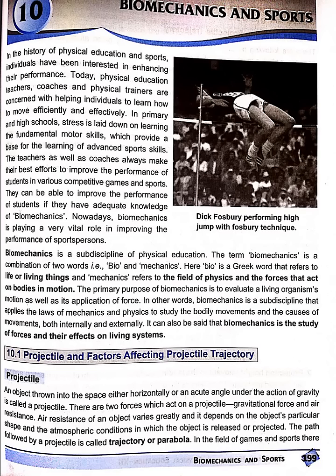Projectile and factors affecting projectile trajectory: An object thrown in space either horizontally or at an acute angle under the action of gravity is called a projectile. There are two forces acting on a projectile: gravitational force and air resistance. Air resistance of an object varies greatly and is dependent on the object's particular shape and the atmospheric conditions in which the object is released or projected. The path followed by the projectile is called the trajectory, which takes the shape of a parabola.